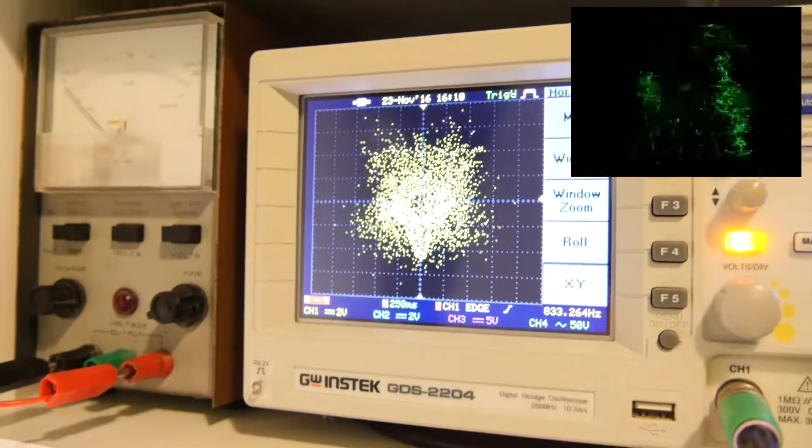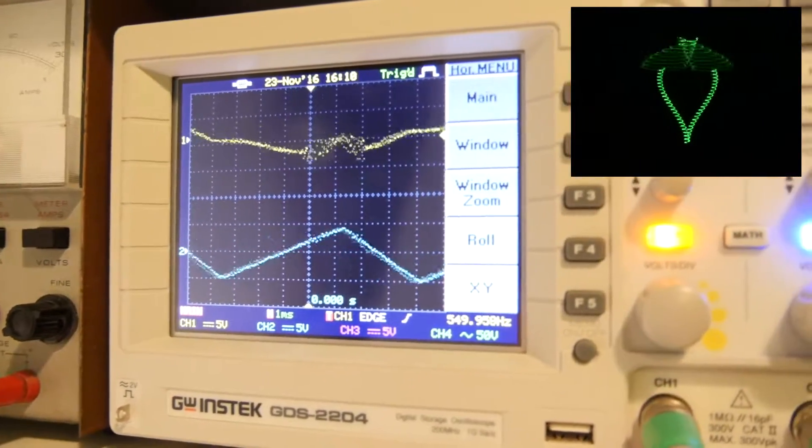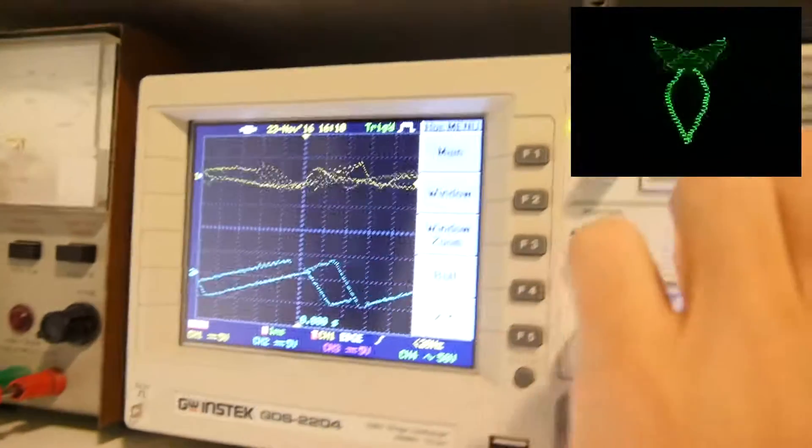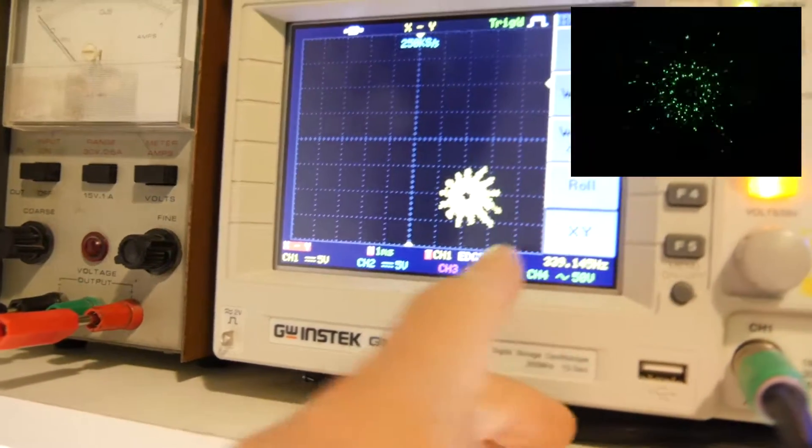I'm going to push auto set, see what that does. So that's the normal representation you'd see on your scope so you can see the sort of sound waves here. So I'm going to go to horizontal menu again, XY mode and there's our shrooms dancing around.